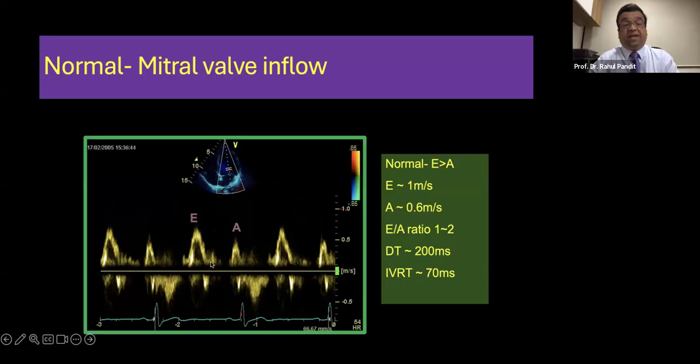You can see that E wave coming up. Then as the E wave decelerates down, you have a phase of diastasis where the pressures have equalized and there is no flow happening. And then as the atria contracts, you generate an A wave as well. Normally, you will have E wave which will be around twice the size of A wave.